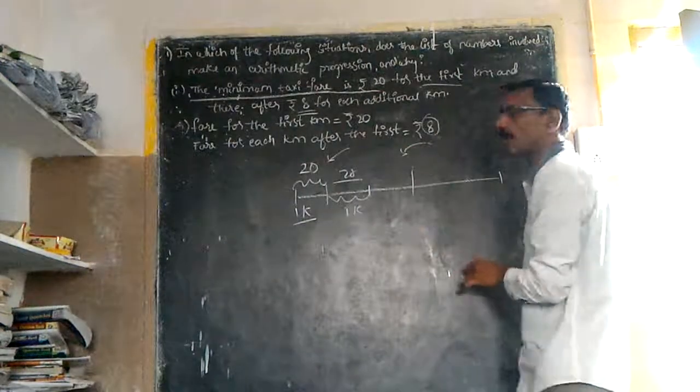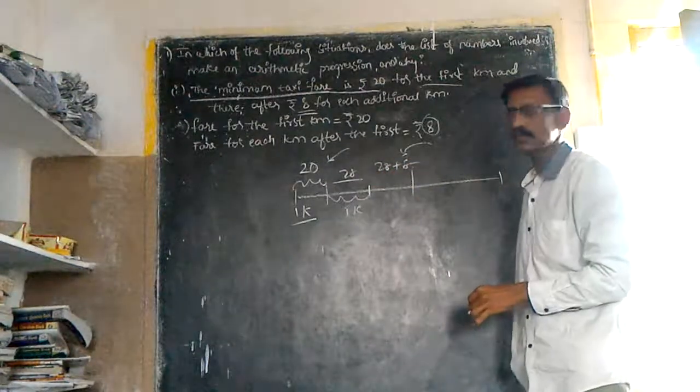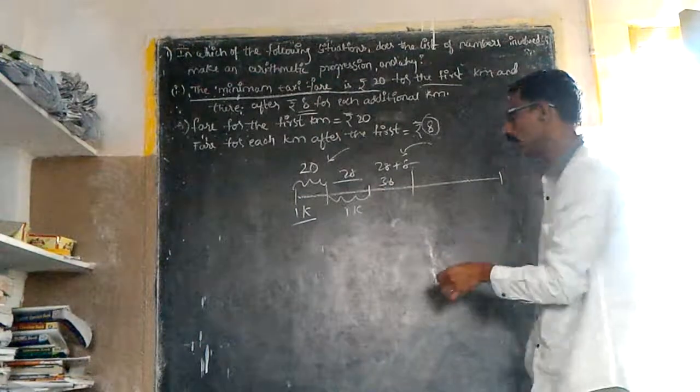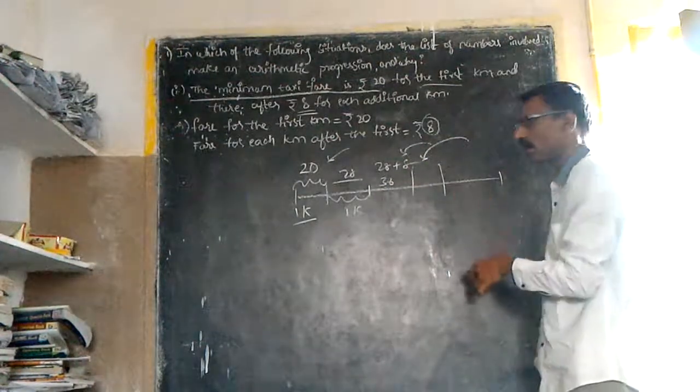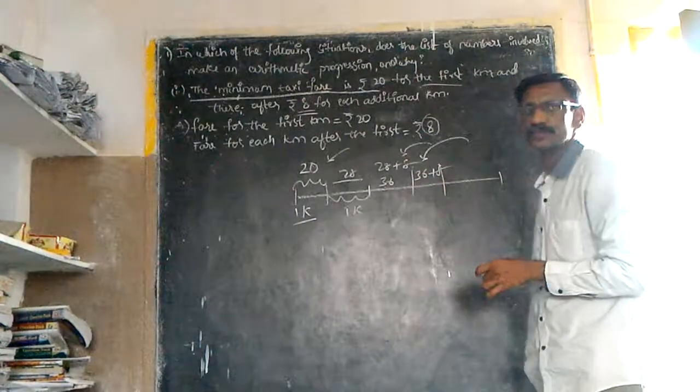Eight rupees, so 28. 28 plus 8, 36. 36 plus 8, 44.